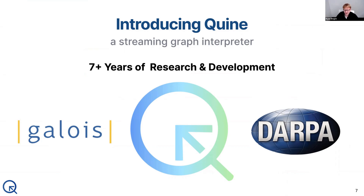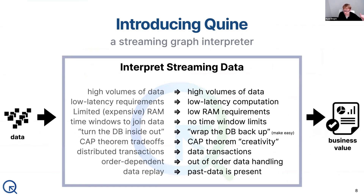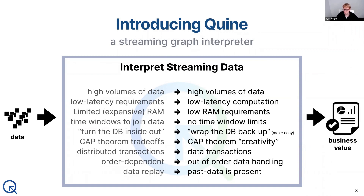As a streaming graph, we're aiming to take all those initial requirements and change the game — to provide new capabilities that can handle high volume data processing and low computation, but do so with low RAM requirements and banish this idea of time windows that limit what you're actually able to put together from your data streams. Wrap the database back up so that it's easy to use, easy to scale, deploy at scale, handle data that comes out of order, and even do historical queries without having to build a completely separate pipeline.